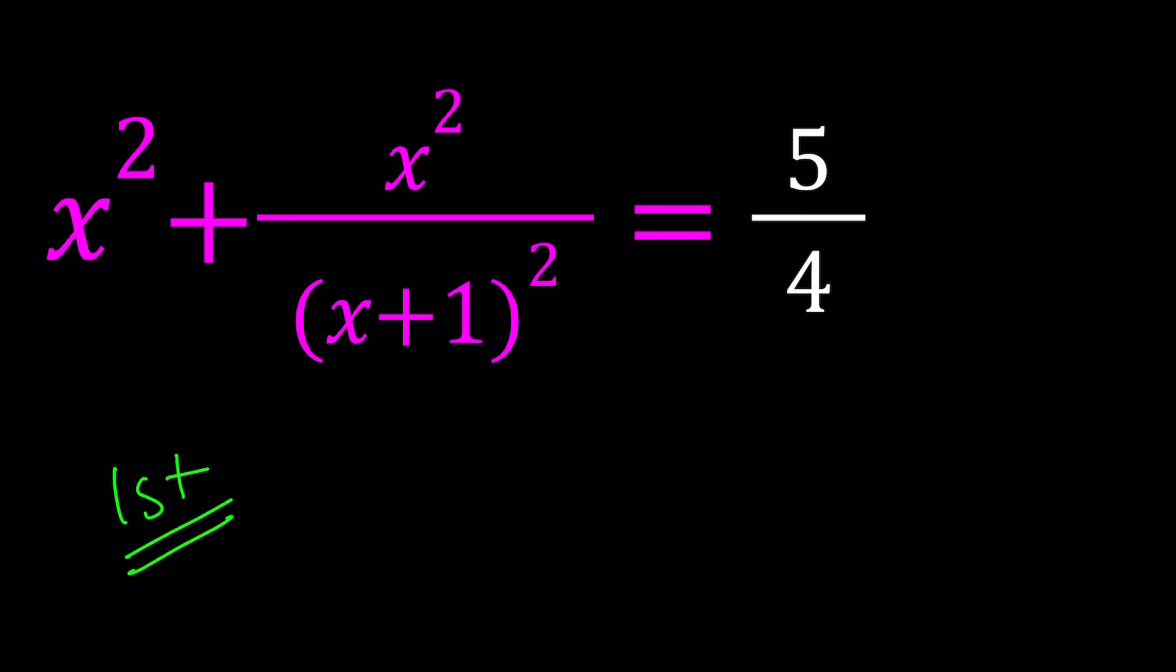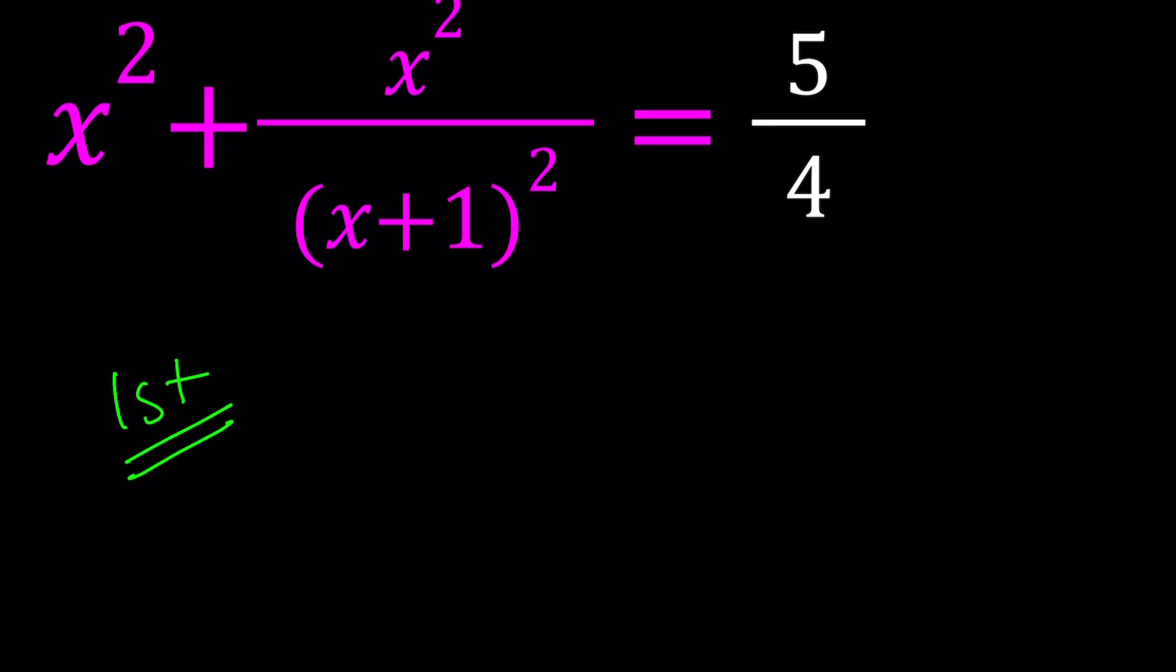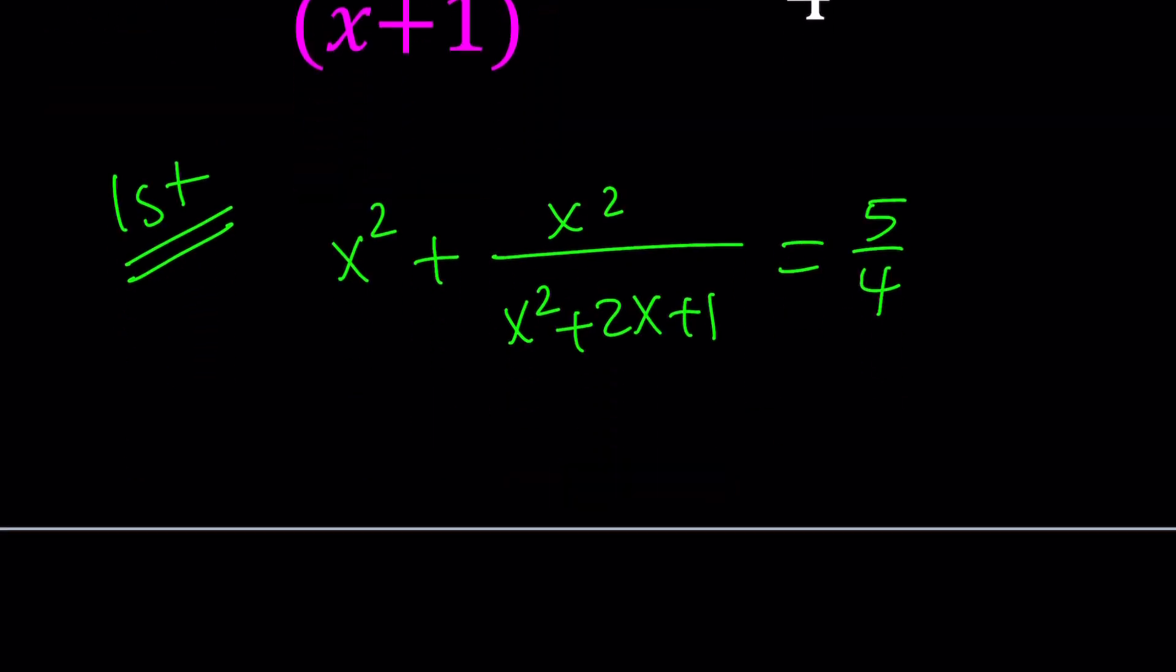When you see a problem like this, brute force tells us that you should just expand everything. So if you do that, x squared plus x squared over x squared plus 2x plus 1 equals 5 over 4. And if you make a common denominator or just multiply both sides by x squared plus 2x plus 1, then you're going to get the following: x squared times x squared plus 2x plus 1 plus x squared equals 5 over 4 times x squared plus 2x plus 1.